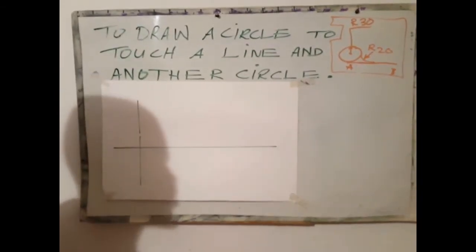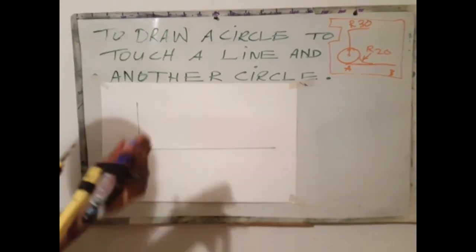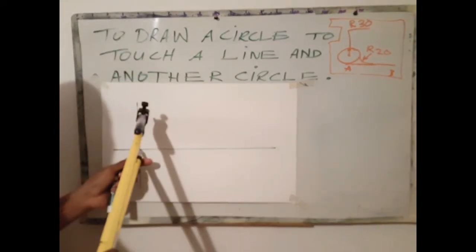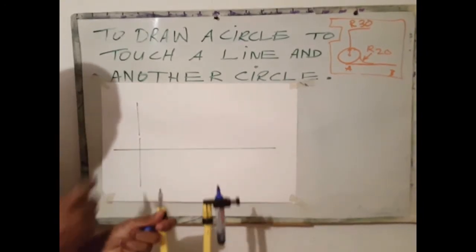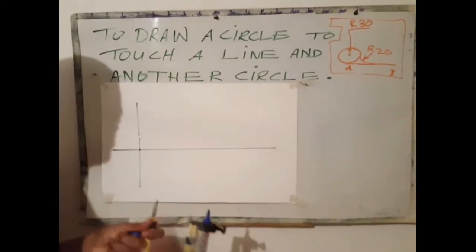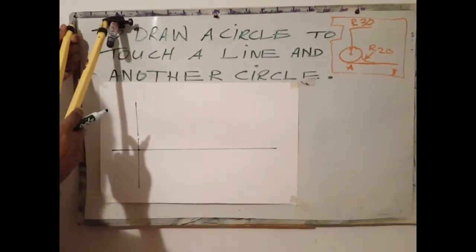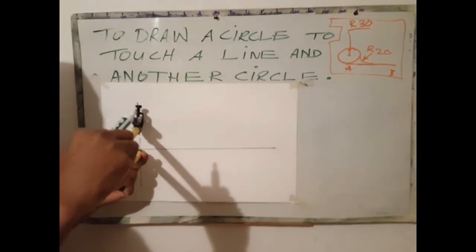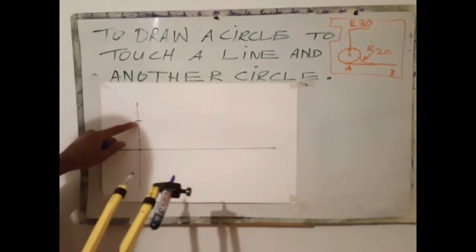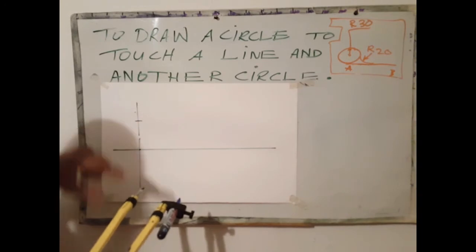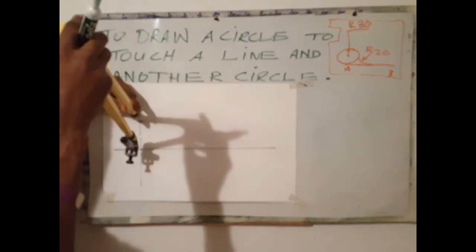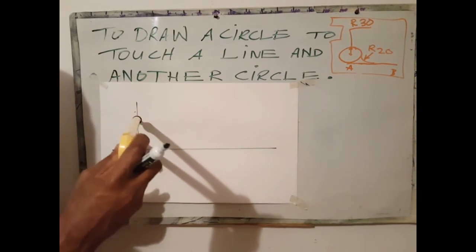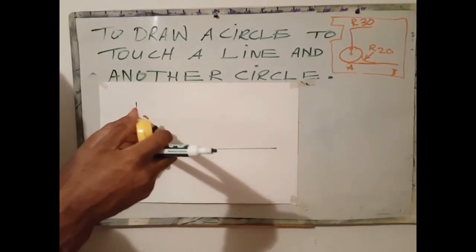Therefore I need to open my compass to 30 millimeters. Using this point as center, with my 30 millimeters, scribe an arc here at a point. Next I'm going to use that point as center to draw a circle.